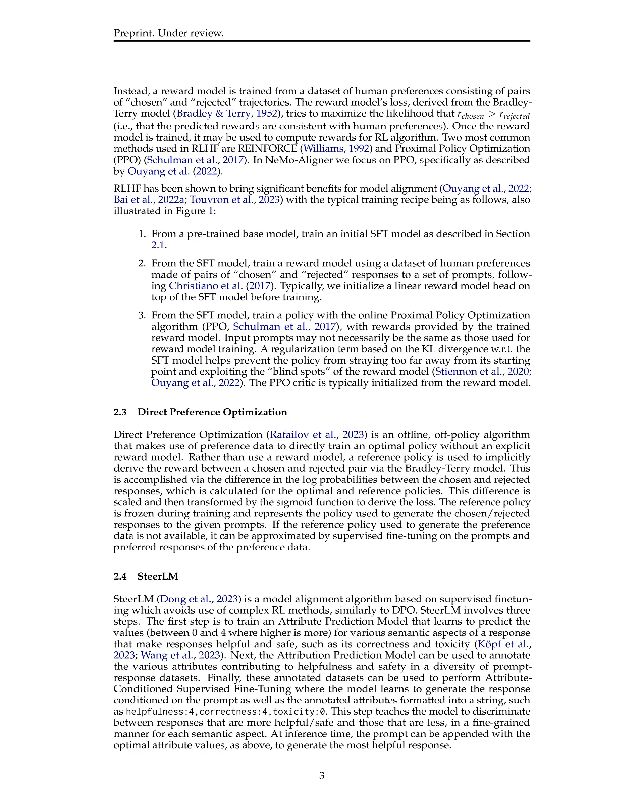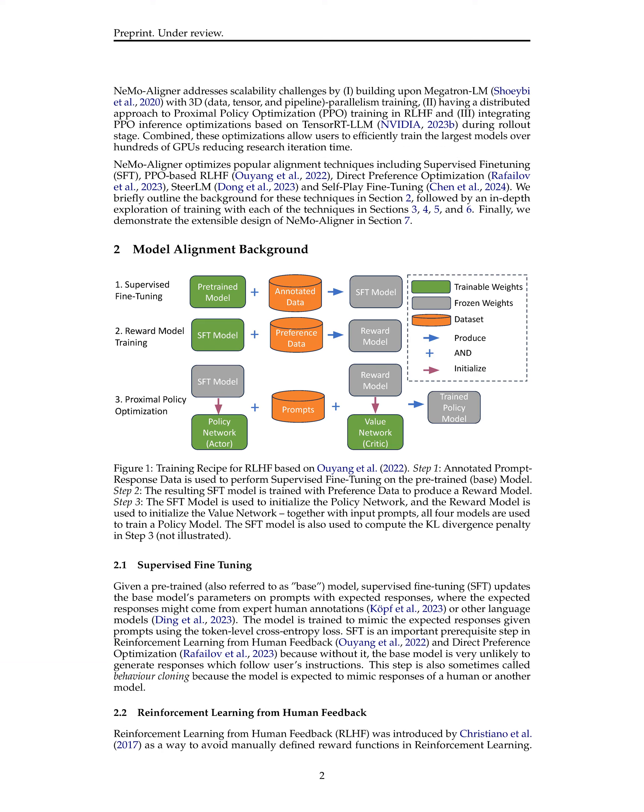The process starts with training a base model through SFT, followed by training a reward model using human preferences data, and then training a policy using PPO with rewards from the trained reward model. NEMO Aligner also includes optimizations for PPO rollout, where response generation is a bottleneck. This stage is optimized using TensorRT-LLM for efficient response generation.